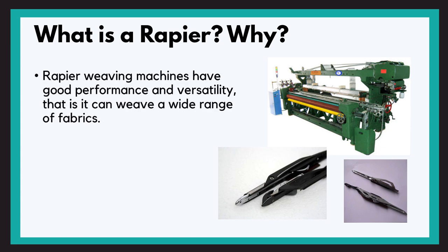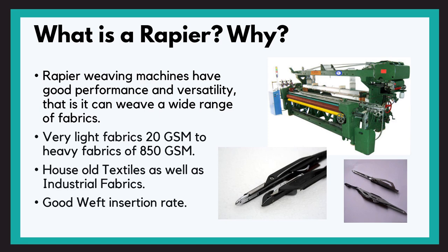Rapier machines have good performance and versatility, so we can weave a wide range of fabric from 20 GSM to 850 GSM, where GSM is grams per square meter. If you are not well-versed with this term, go watch our video on GSM explain, link of which is given in the description below. It is used for household as well as industrial fabric and has a good weft insertion rate.